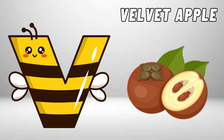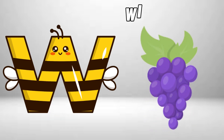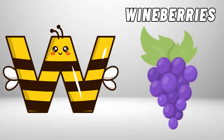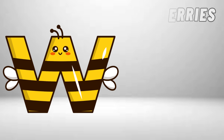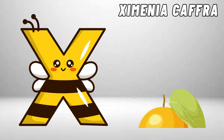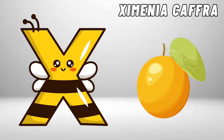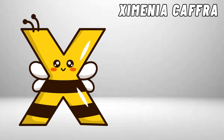V is for Velvet Apple. V, V. Velvet Apple. W is for Wineberries. W, W. Wineberries. X is for Samania Kofra. Z, Z. Samania Kofra.